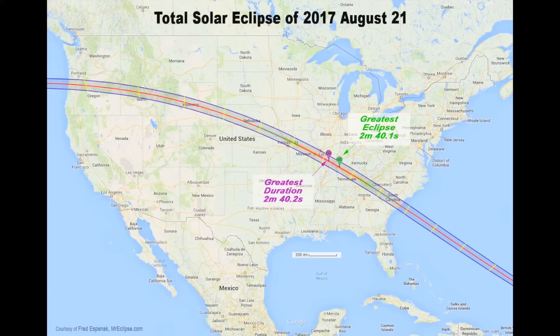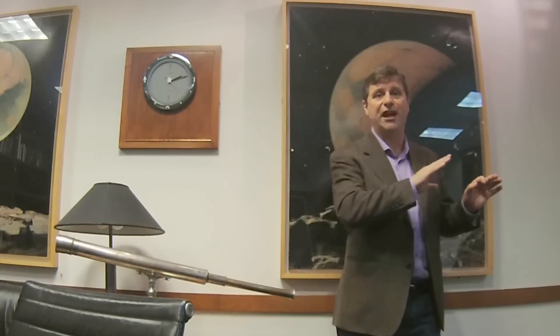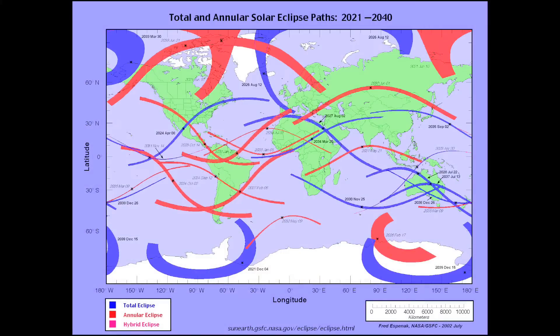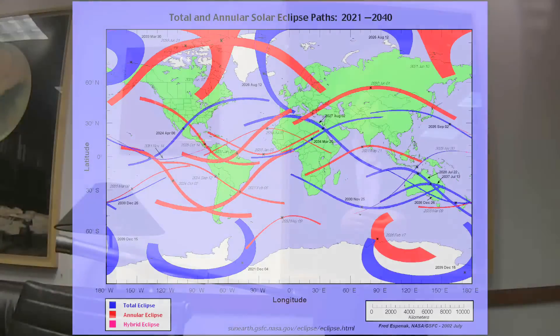A total solar eclipse is when you're completely in the shadow of the Moon. That shadow is very small — only tens of miles wide on the surface of the Earth. The next one will traverse across the United States on August 21st of 2017, and millions of people are going to try to be in the path of totality as the shadow scoots across. If you miss it, you can watch another one on April 4th of 2024 — you'd have to wait about seven years before seeing another total solar eclipse in the United States.